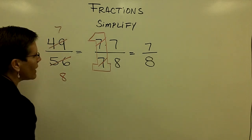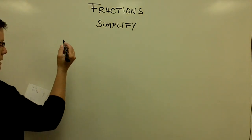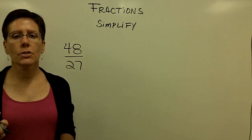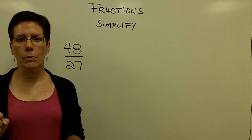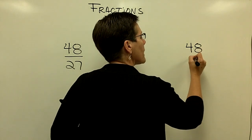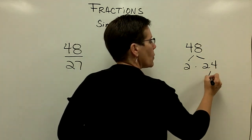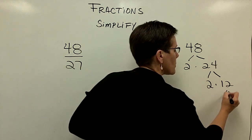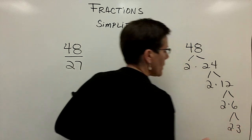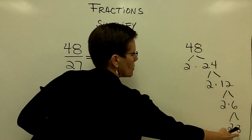Let's say that you have a fraction where you cannot easily see the common factor, like 48 over 27. One thing you can do is factor both the numerator and the denominator into the product of their prime factors. For 48: 2 times 24, 24 is 2 times 12, 12 is 2 times 6, and 6 is 2 times 3. So the prime factors of 48 are 2 times 2 times 2 times 2 times 3.